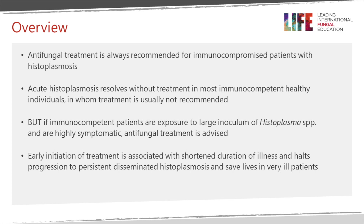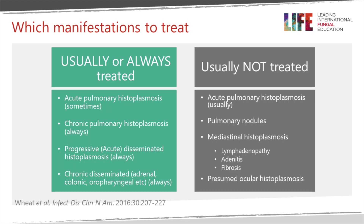Early initiation of therapy is associated with a much better outcome overall and saves lives in very ill patients, so it's important to consider the diagnosis early and treat as early as possible. The manifestations that are usually or always treated include the severely ill patient with acute pulmonary histoplasmosis, chronic pulmonary histoplasmosis, progressive or acute disseminated histoplasmosis, and the more chronic forms of disseminated disease including adrenal gland involvement, colon, or oropharyngeal disease.